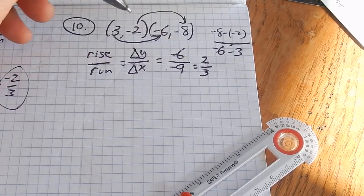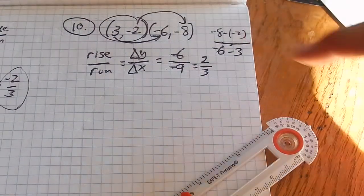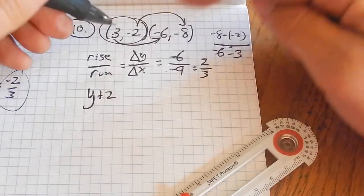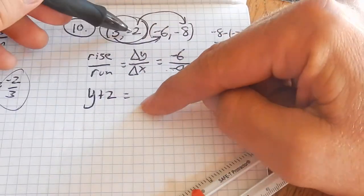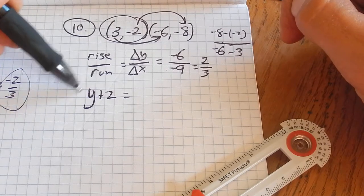I'm going to use point-slope form. It didn't specify what to use, so I'm just going to pick this point. I'm going to write y plus 2. Remember when you're in this form, you're plugging in the y value and trying to make it 0.